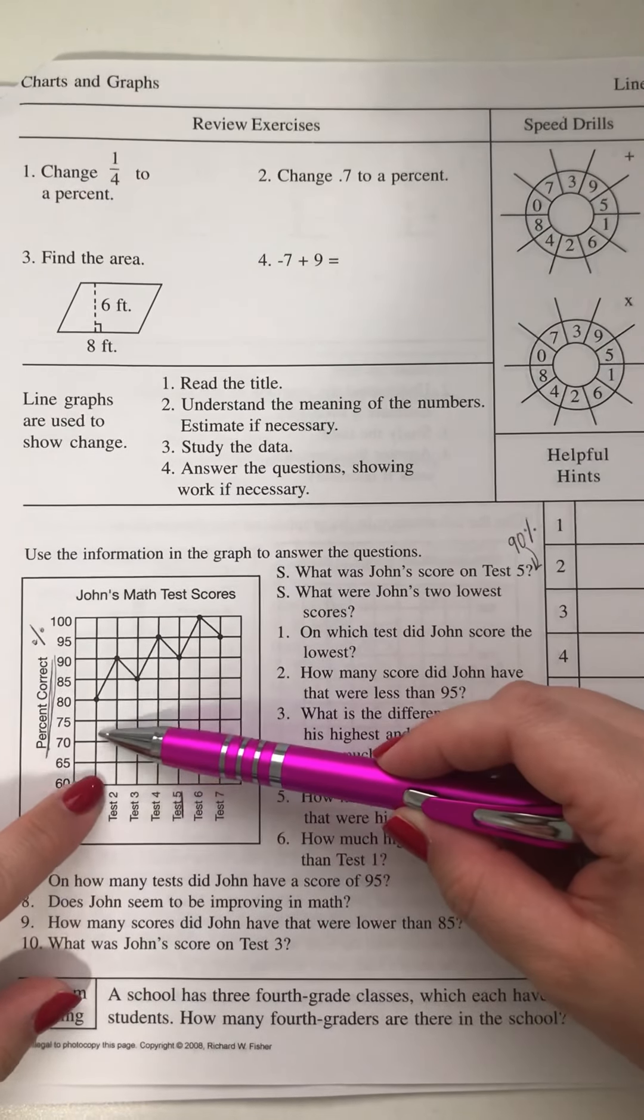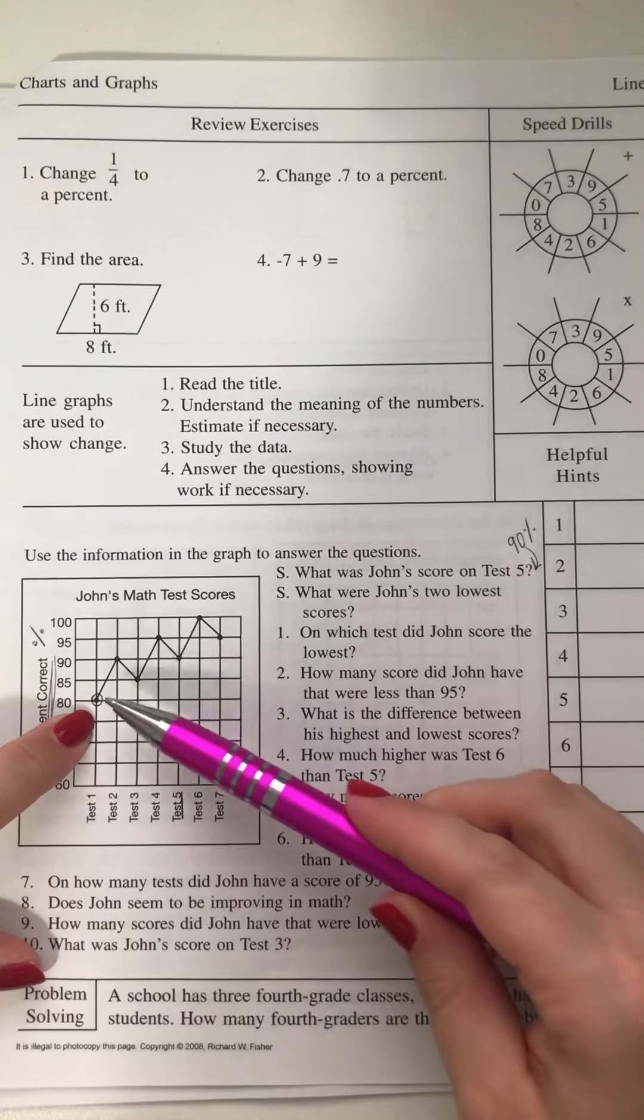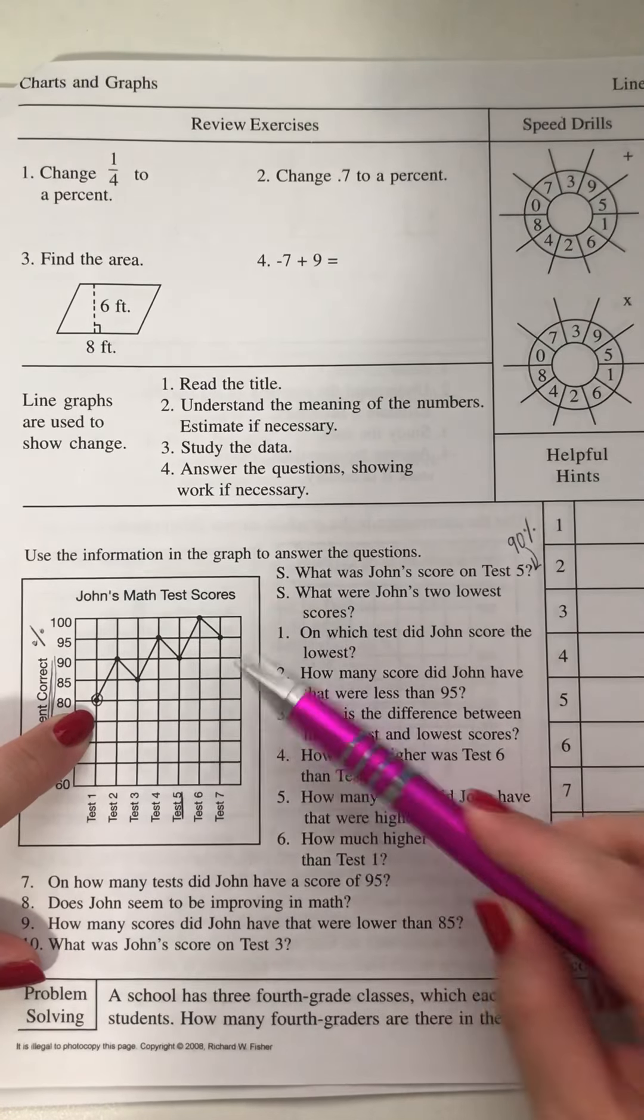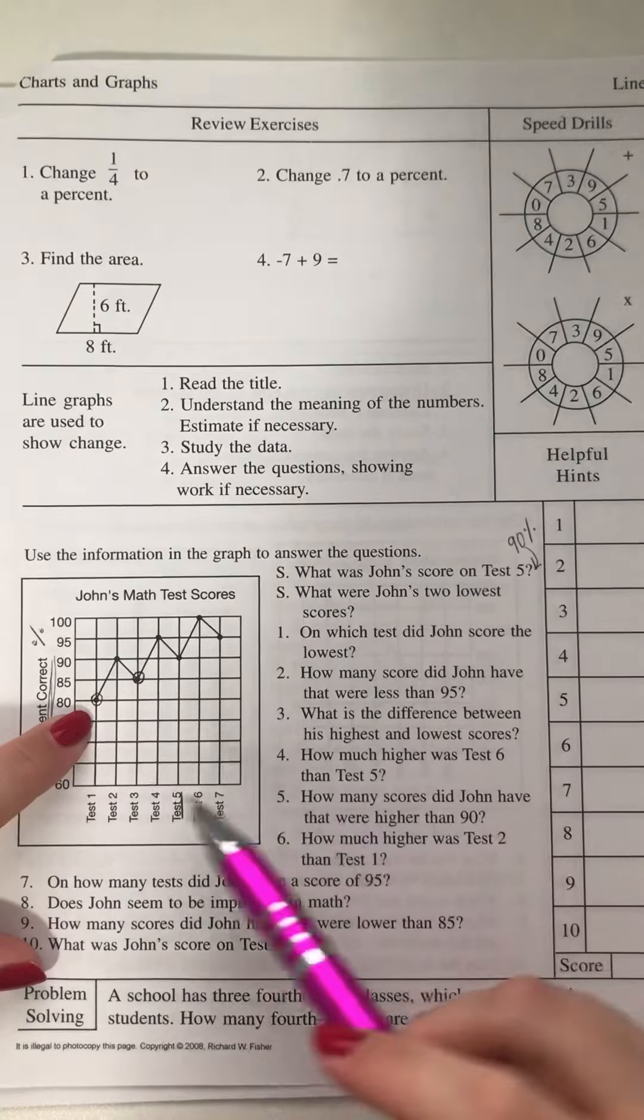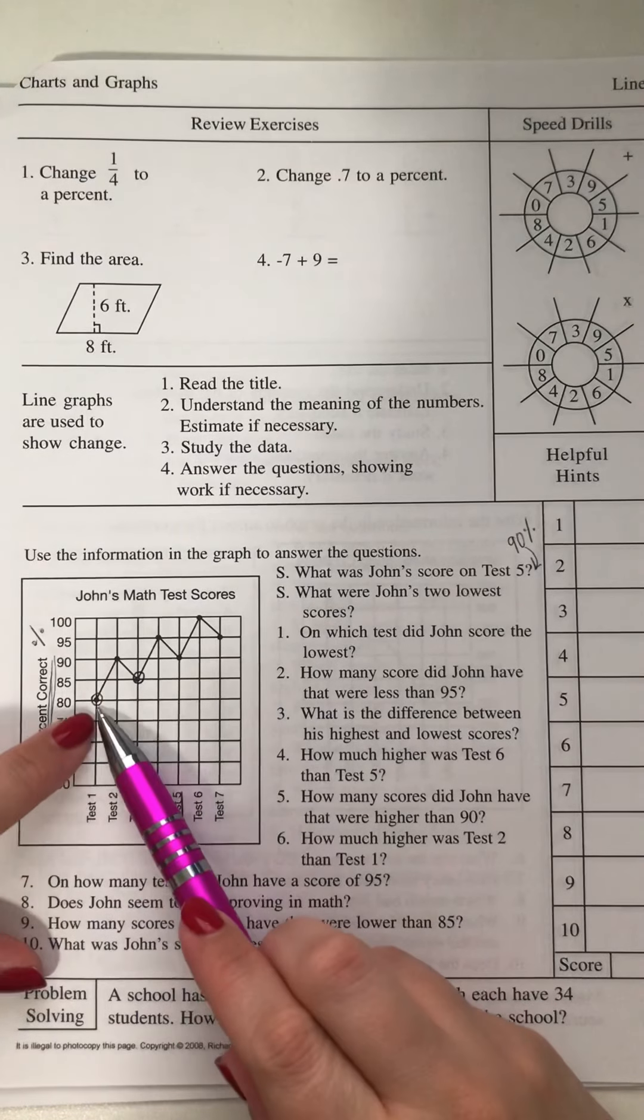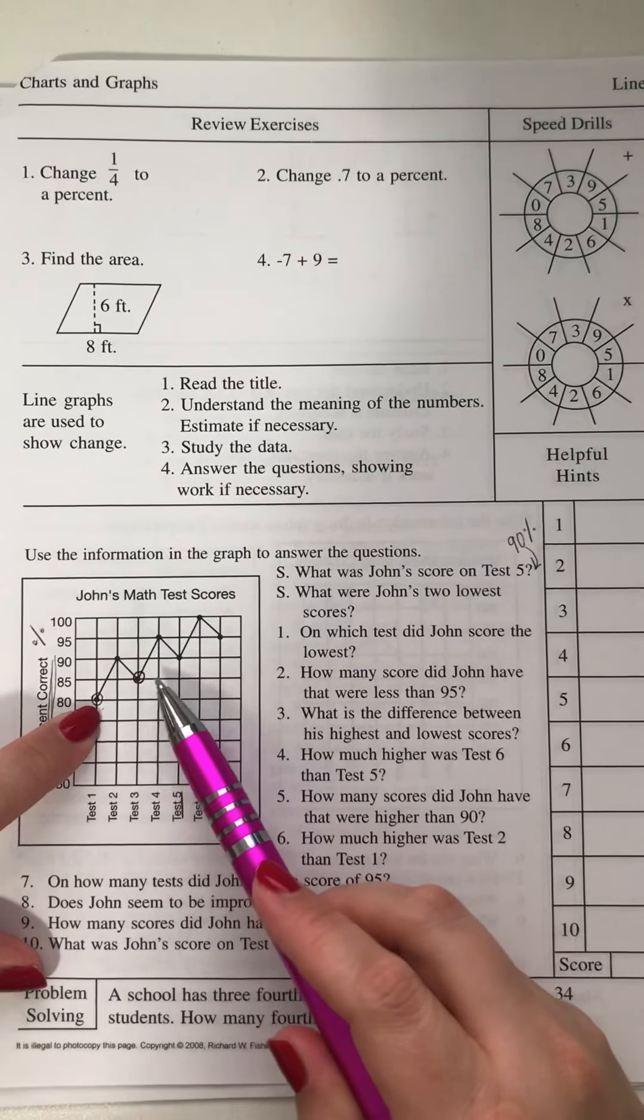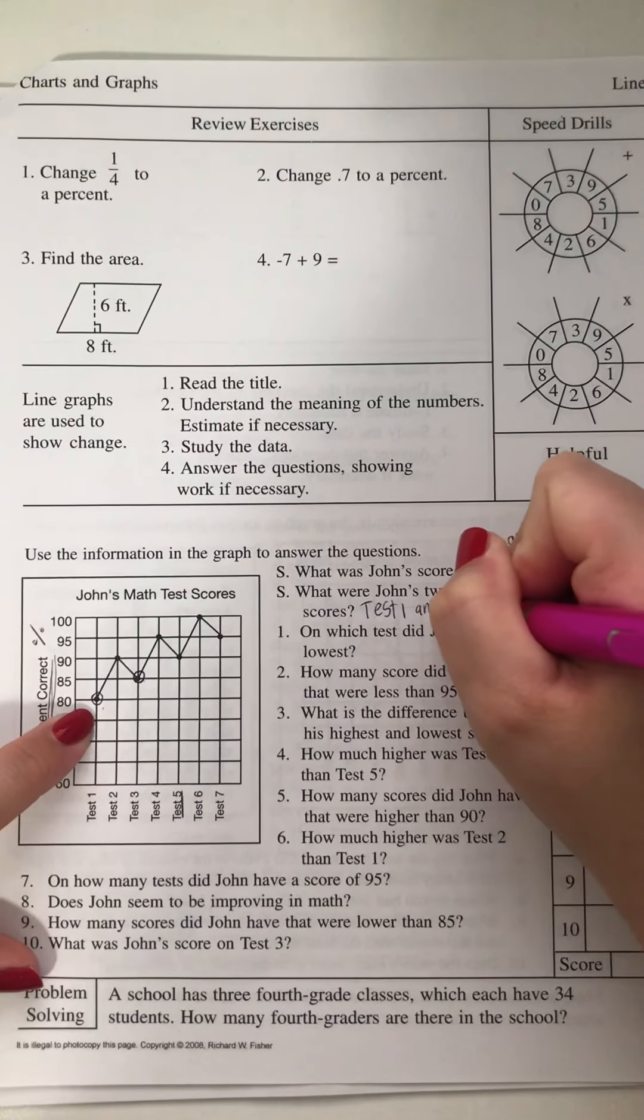what were John's two lowest scores? So you start from the lowest. Here's the first one. We'll mark it so we don't forget. And then we're going to find the second lowest, and it's here on this line. So it looks like John's lowest scores were on test 1, because that is where the first low dot is, and then test 3. That's where the second one. So we would say, test 1, and test 3.